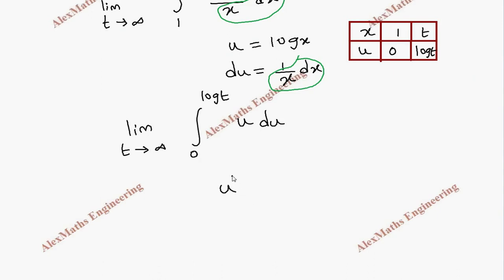New integration is u squared by 2, and we have to substitute the limit 0 to log t. And we have limit t tends to infinity. By substituting upper limit we get log t whole square by 2 minus 0.